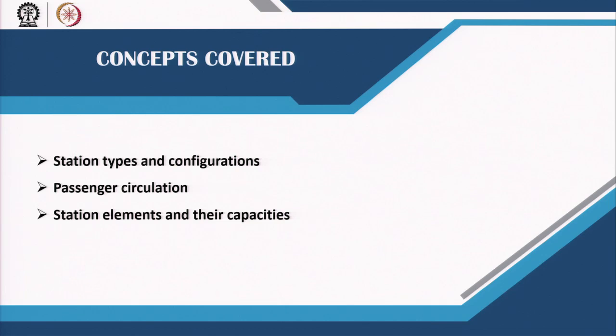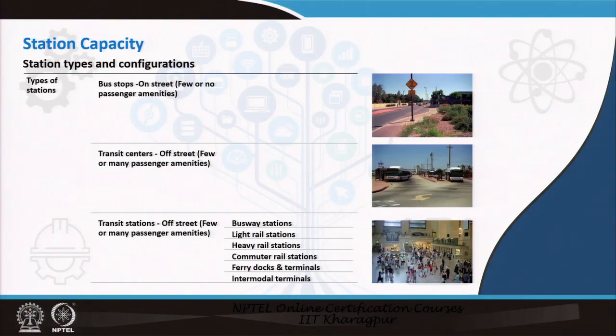Your transit line is as good as your stations, because these are primarily the places where people get on and off your transit lines. Unless you have enough capacity for people to board or alight from your bus or transit links at these stations, people are not going to use the public transportation lines as much. The stations — what we like to call nodes in our entire network — are very crucial, and their design is very crucial in facilitating a good public transportation system for your city.